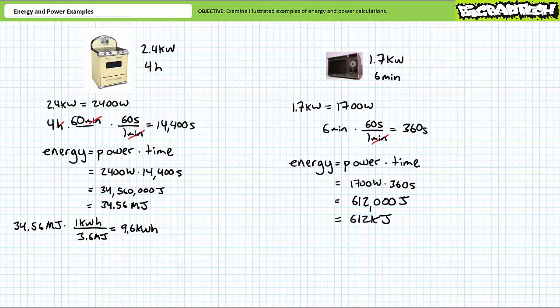Let's do the same thing for the microwave oven. Via unit conversion, 612 kilojoules is equivalent to 0.170 kilowatt hours, or more appropriately, 170 watt hours.